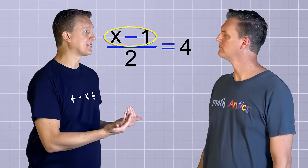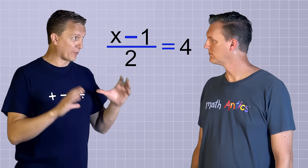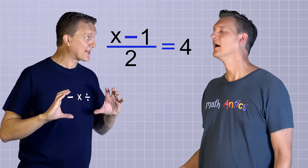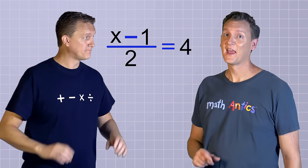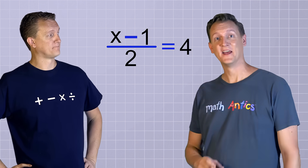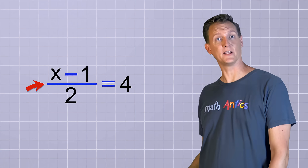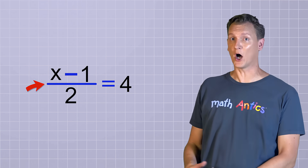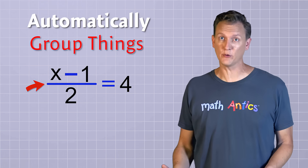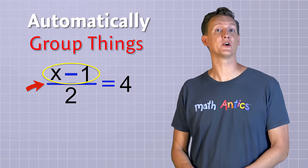The x minus 1 on top forms a group. But how can x minus 1 be a group — I don't see any parentheses or brackets around them. That's a good question. In algebra, the fraction line is used as a way to automatically group things that are above it or things that are below it.